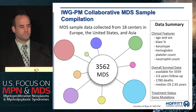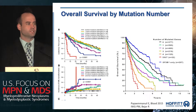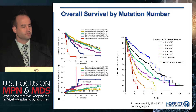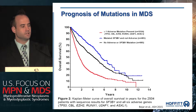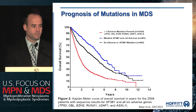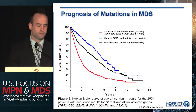We have been part of a large collaboration with the IWGPM group, with data from over 3,500 patients who have sequencing and clinical annotation, with approximately 3.6 years of follow-up. The number of mutations is predictive for both leukemia-free and overall survival. Data presented at ASH in 2015 showed that presence of p53, CBL, EZH2, RUNX1, UTF1, or ASXL1 predicted for poor outcomes independent of clinical prognostic models, whereas SF3B1 mutation in the absence of adverse markers predicted for improved outcomes.